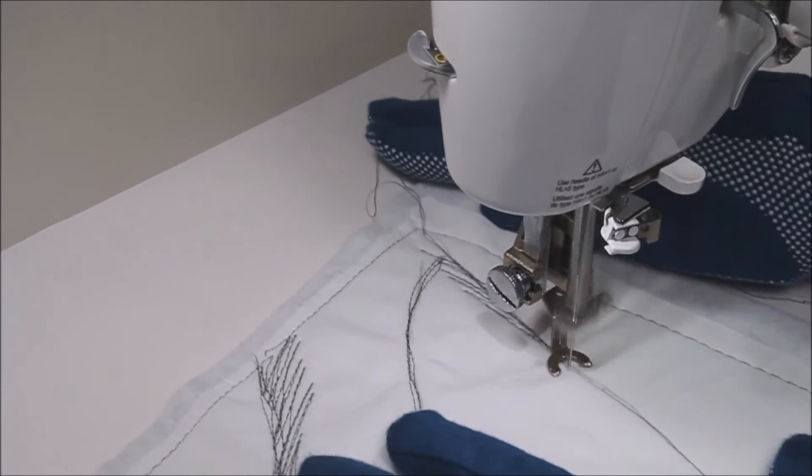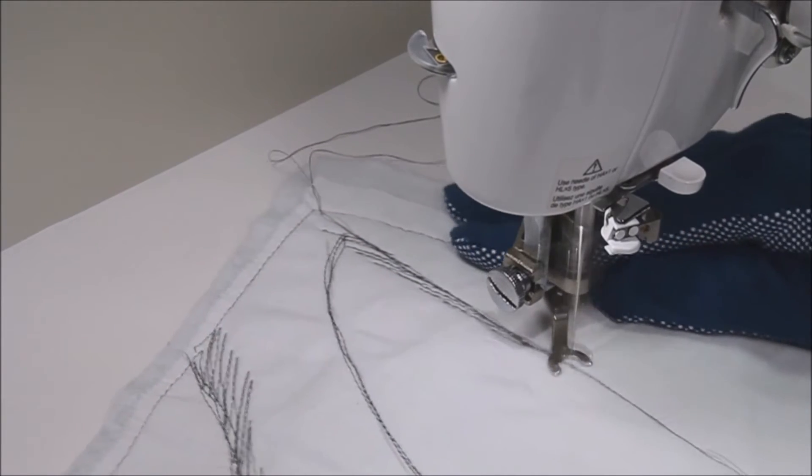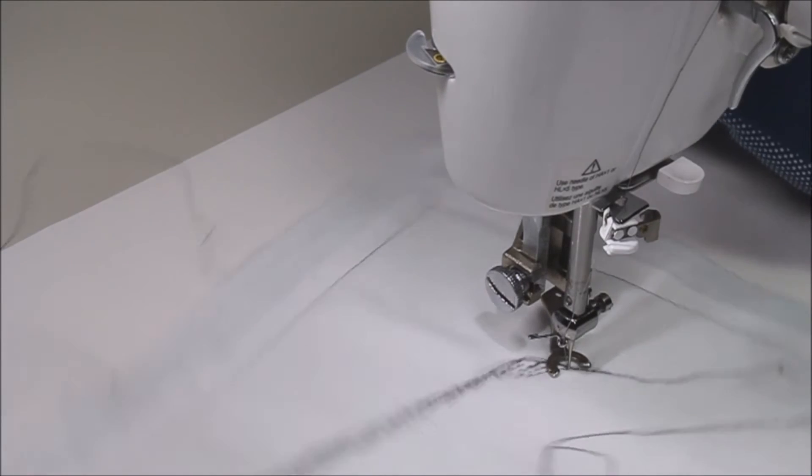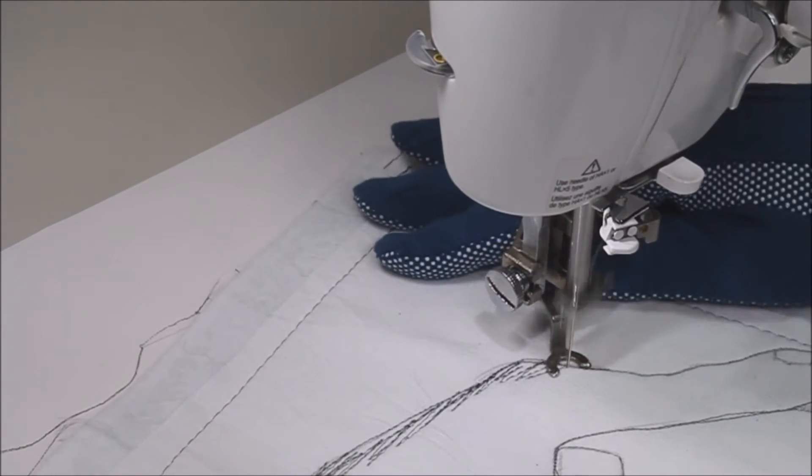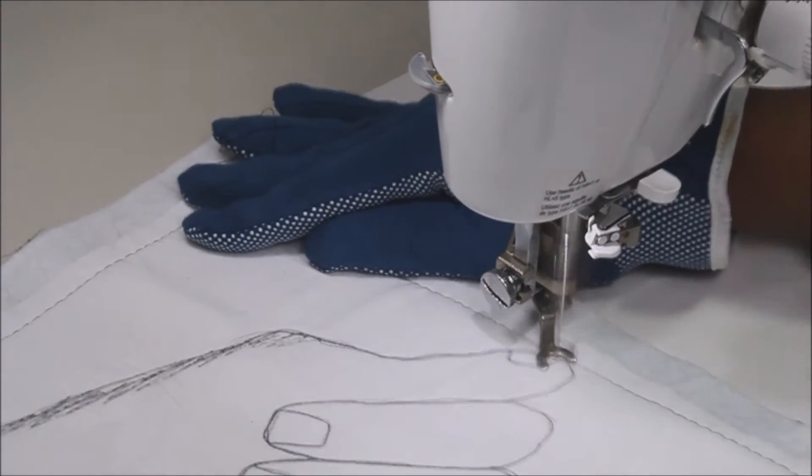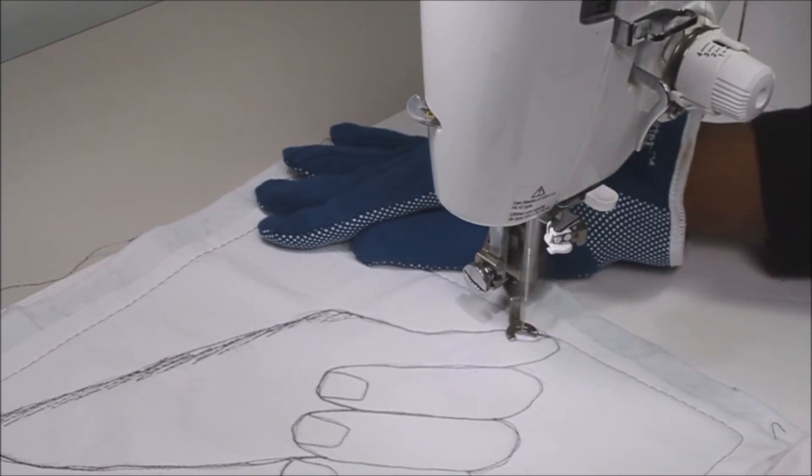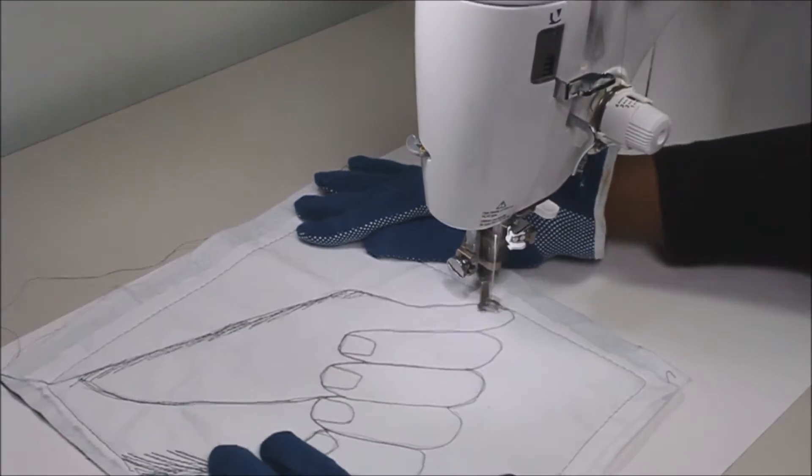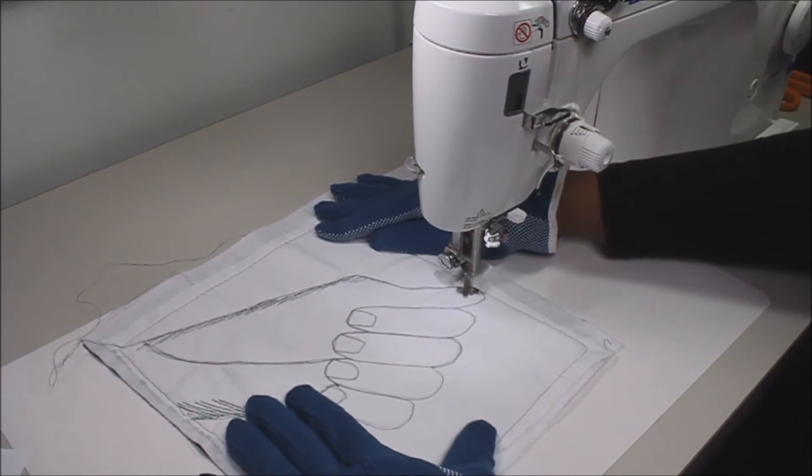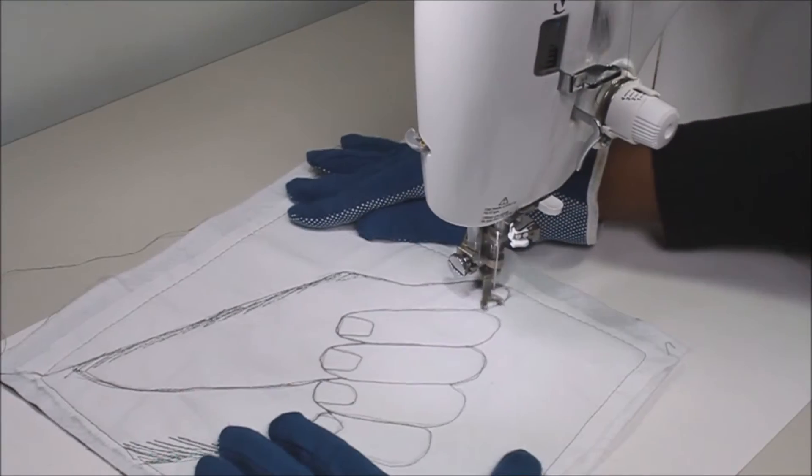I continue to stitch lines back and forth to simulate shading. It's a slow process but very rewarding. Now I go on to shade the fingernail of the thumb. I want it to be dark shading so I'm going to stitch very close together. As you can see, my stitch lines are very close together resulting in a very dark shading.